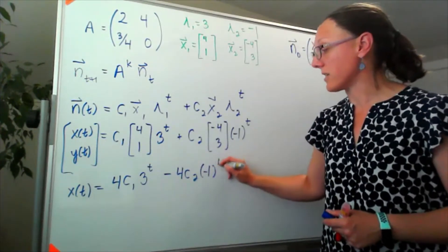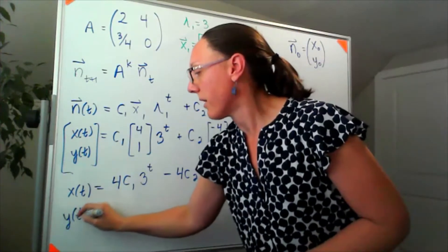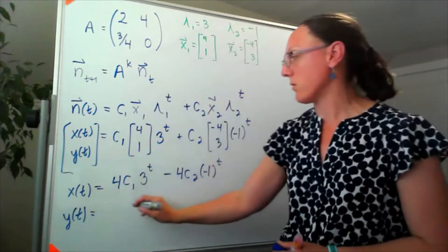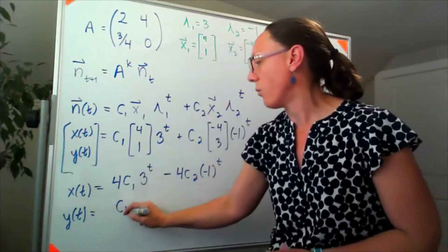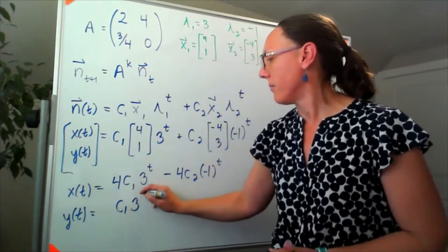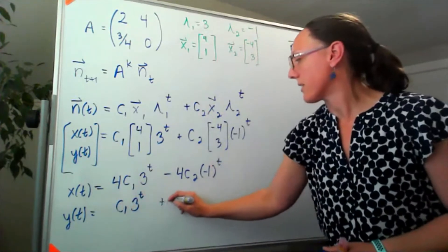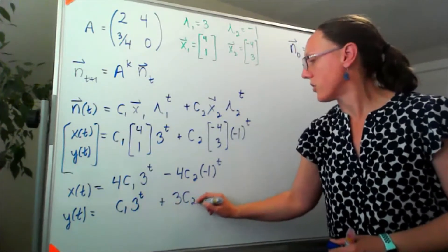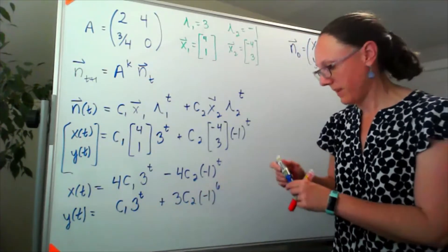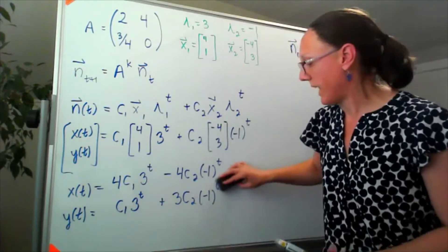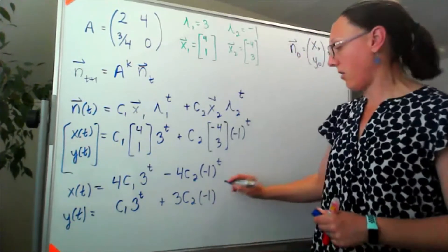And for y of t, I'm now going to read off those bottom rows, so I'd have c1, 3 to the t plus 3c2 times negative 1 to the t.